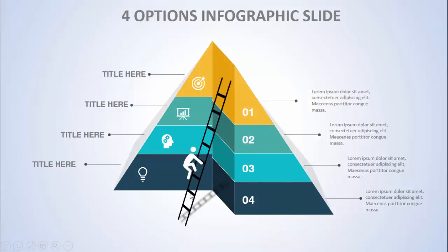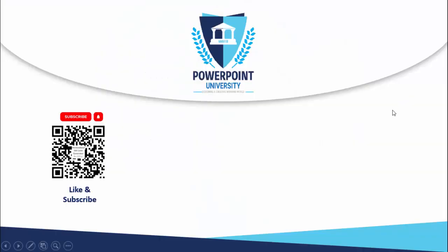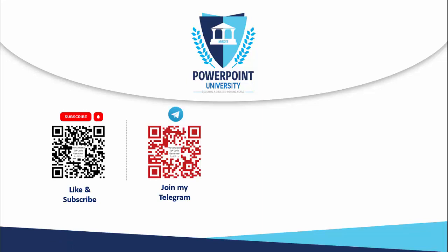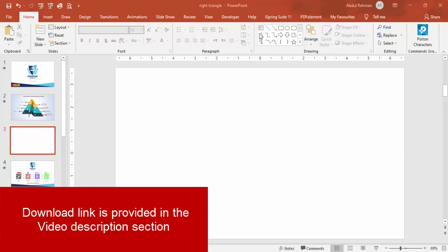I've added a ladder where a person is trying to climb to reach option one or two, its goal. If you have not subscribed to my channel PowerPoint University, please subscribe and enable the bell notification. You can join my Telegram group with the QR code, and if you'd like to support the channel you can do it through PayPal or Patreon. Let's start the tutorial.